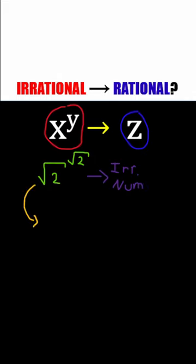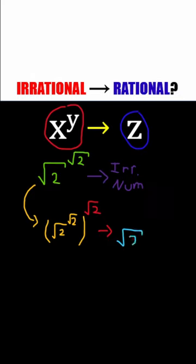But if we take that new irrational number and raise it to the square root of two again, we get the square root of two squared, which we know is the rational number two. So now you know.